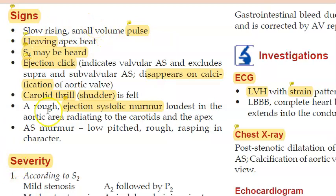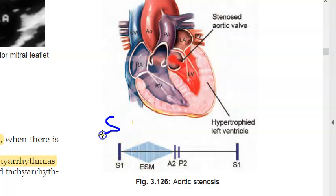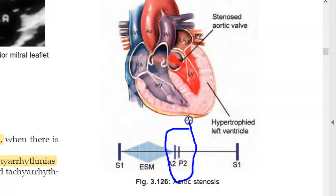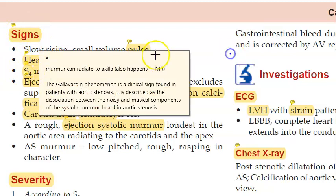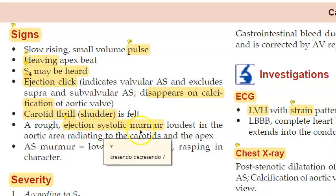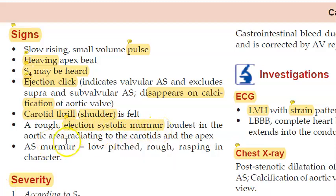To summarize on a diagram: you have S1, then S2 split into A2 and P2, with an ejection systolic murmur in systole. There can be narrow splitting of S2 or reverse splitting of S2. The ejection click can be early and may overlap with S1. S4 may be heard. Importantly, the ejection click disappears on calcification of the aortic valve.